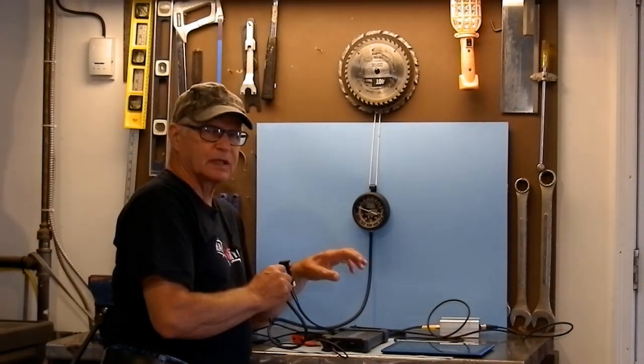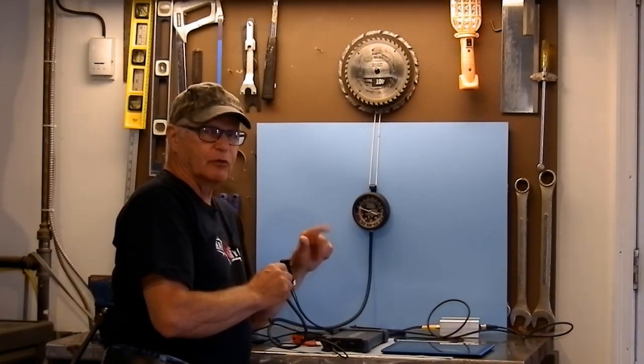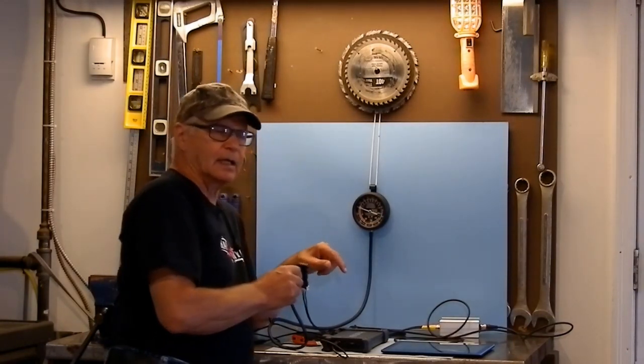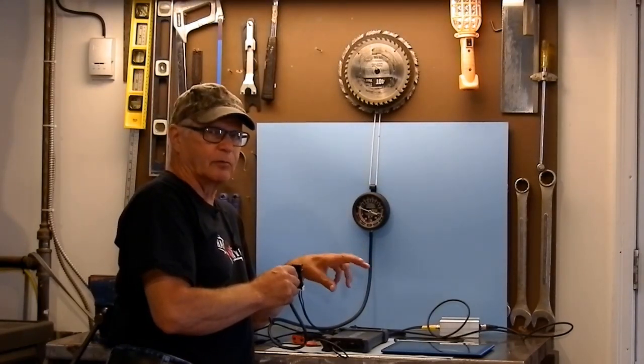you could set up your second channel on the throttle position sensor, and the movement of the throttle could correlate to the vacuum readings that you're getting, and all of it can be recorded real time in the automotive module.